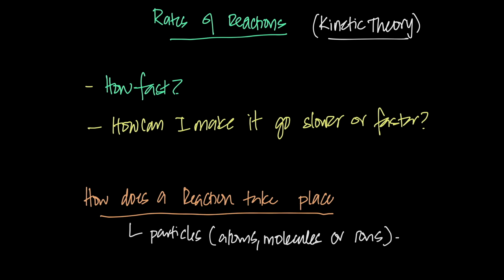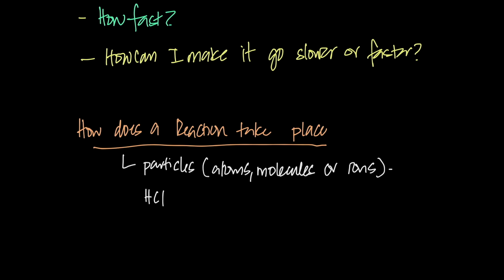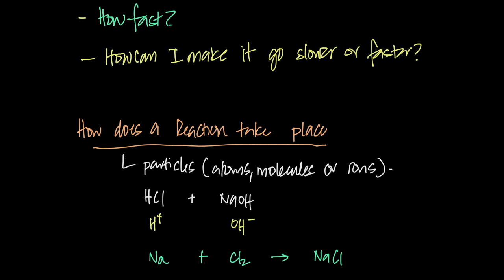We're going to talk about how particles react with each other — that's the focus of the first half of this class. I'll be using the word 'particles' to refer to the smallest units of our reactants. In acid-alkali reactions, the particles are H⁺ ions and OH⁻ ions. For sodium and chlorine reacting to make sodium chloride, the particles are atoms of the metal and chlorine gaseous molecules.